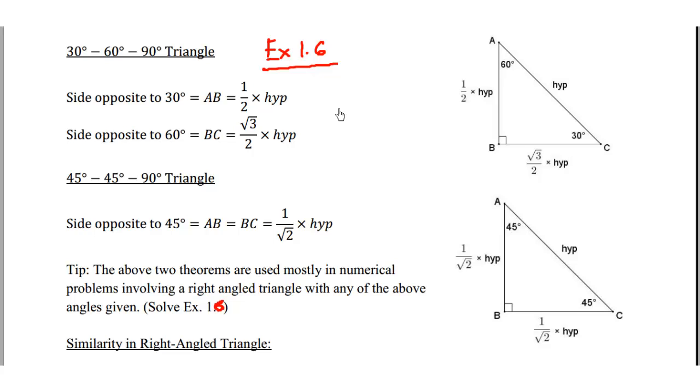Exercise 1.6 deals with two special types of triangles. The first one is the 30 degree, 60 degree, 90 degree triangle.